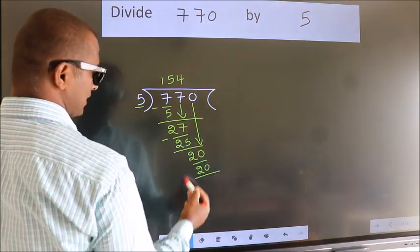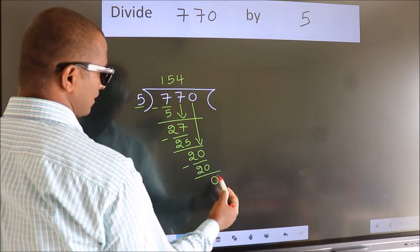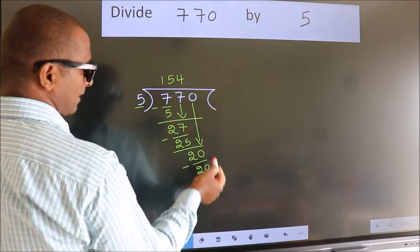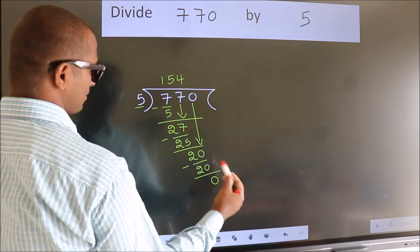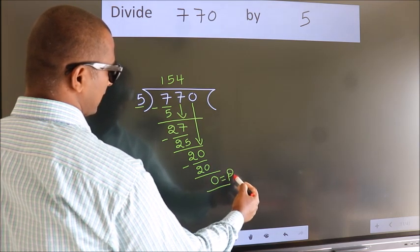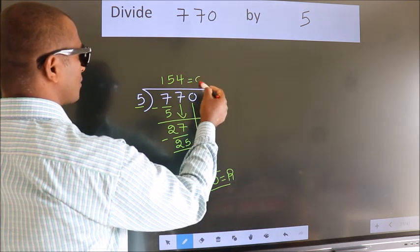Now we subtract. We get 0. No more numbers to bring down, so we stop here. This is our remainder. This is our quotient.